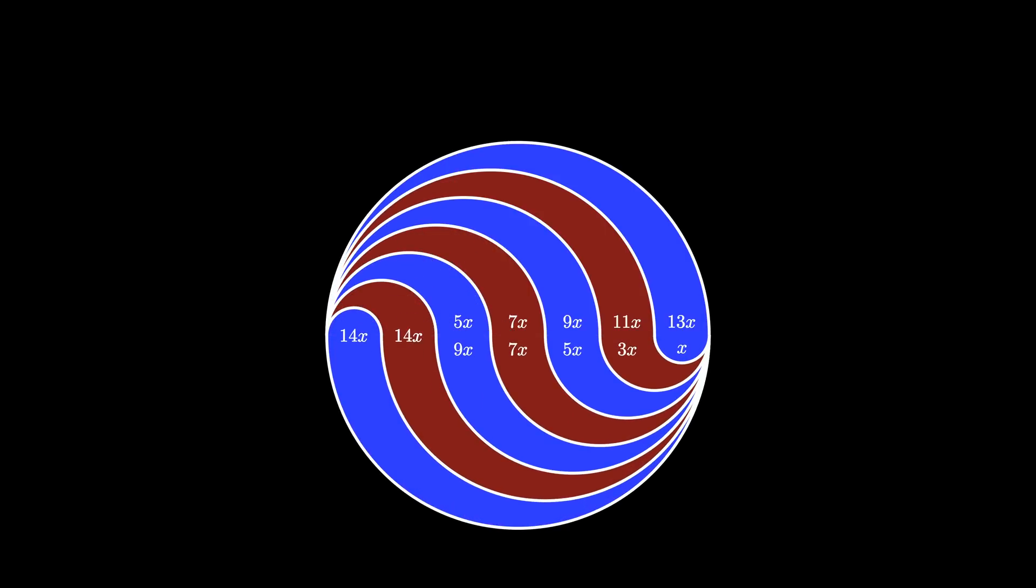Once we adjoin the regions like this, we see that each of the seven created regions has an area of 14 times x. That means that each of these regions has exactly the same area.